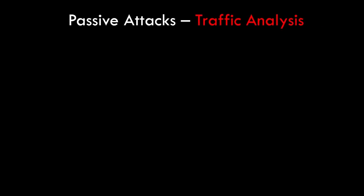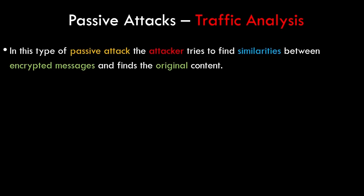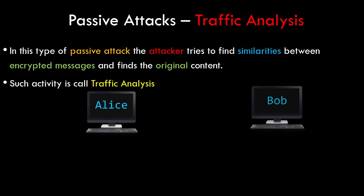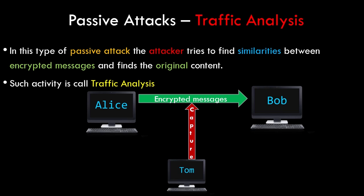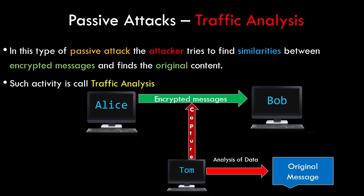Now let's look at the other type of passive attack: traffic analysis. In this type of attack, the attacker tries to find similarities between encrypted messages and finds the original content. Suppose Alice accesses her bank details often using some security algorithm to encrypt her data. A hacker — in this case Tom — can collect this data and perform analysis on it to find out the real details. This activity is known as traffic analysis.